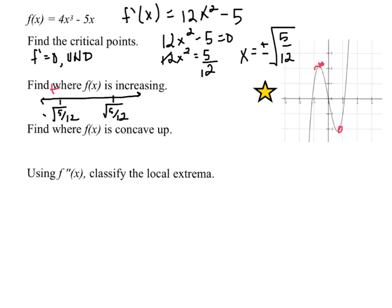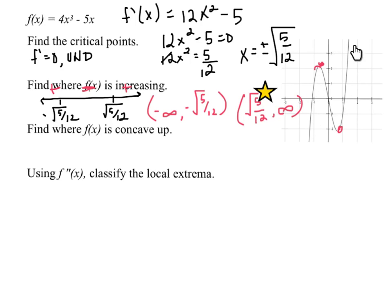Finally, plugging in something large like 2, 12 times that squared minus 5 is positive. F is increasing where f prime is positive, so from negative infinity to negative square root of 5/12, and from square root of 5/12 to infinity. You can certainly see that on the graph — it's increasing from negative infinity to that point, and from that point to positive infinity.